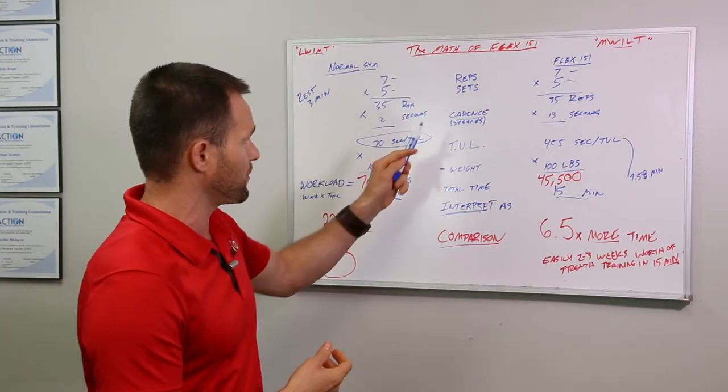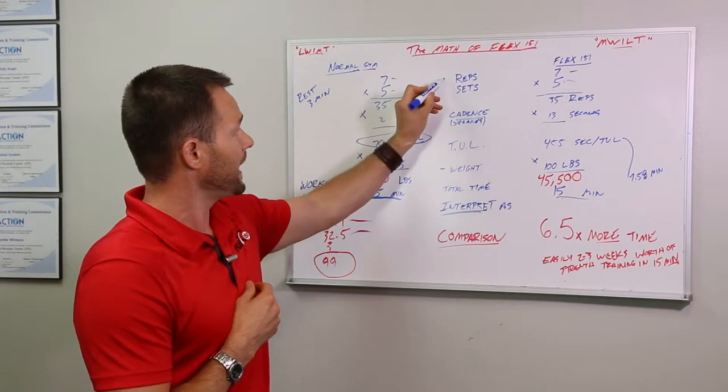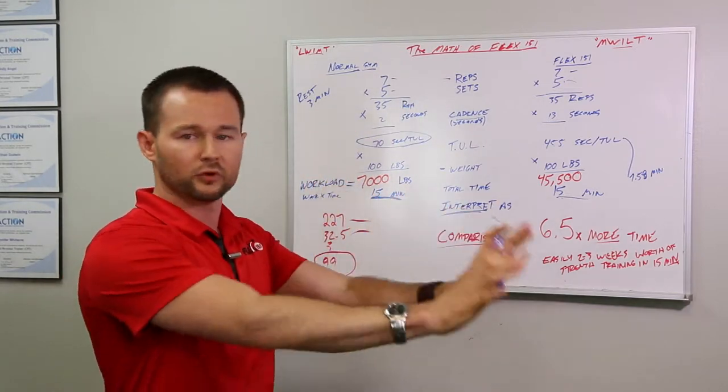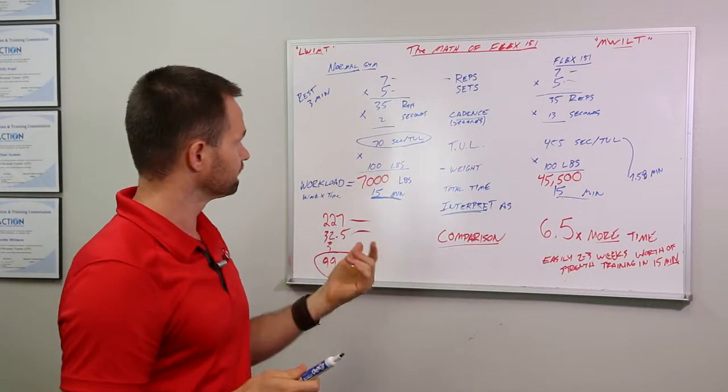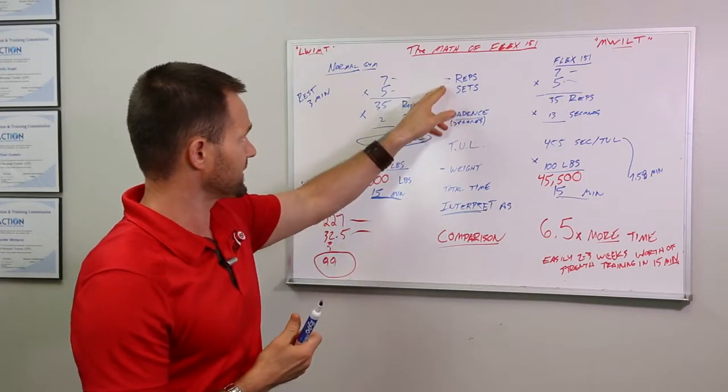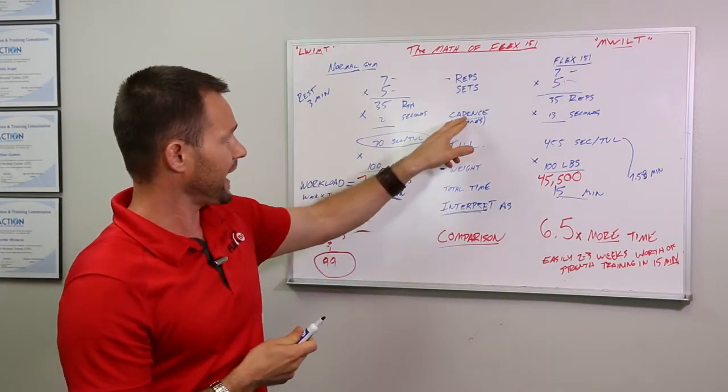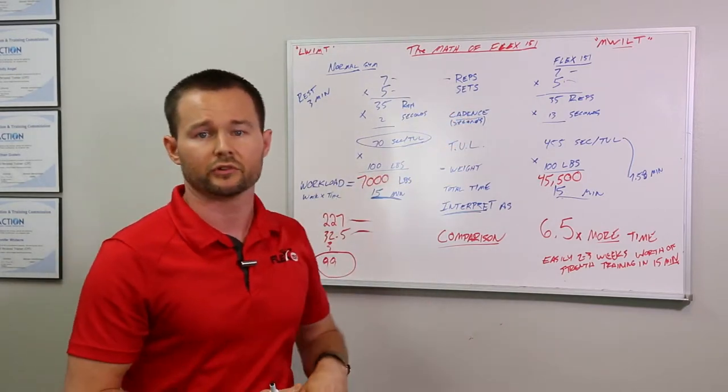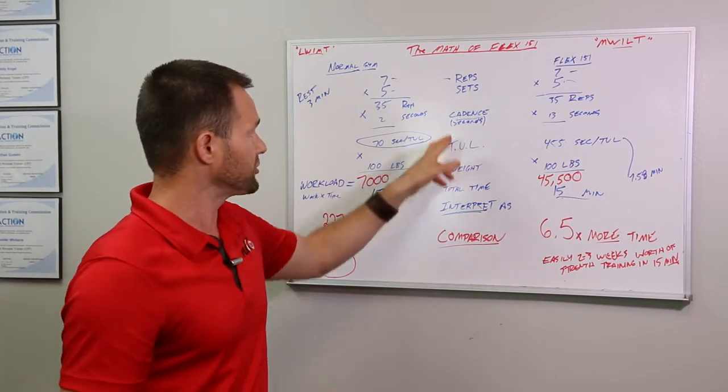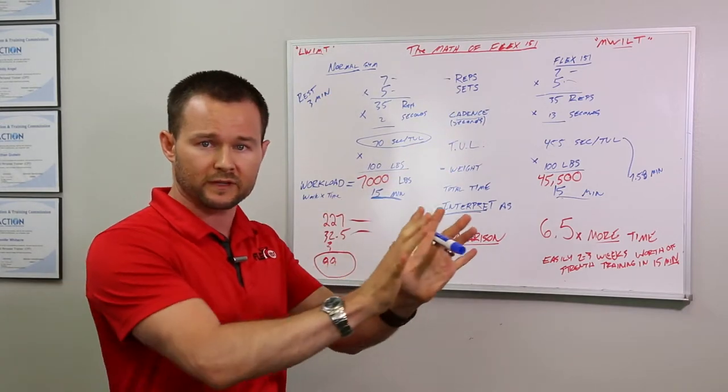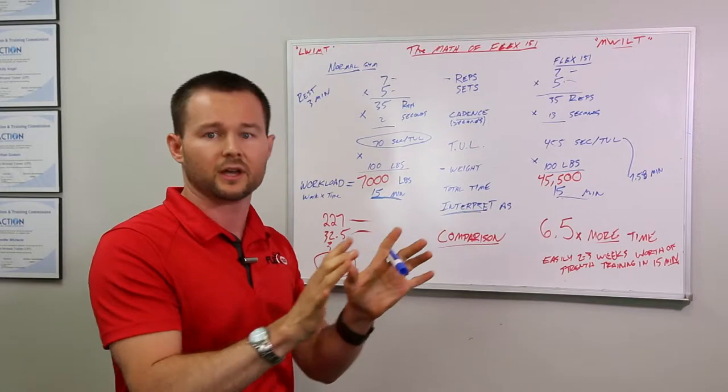So now that we know that, I think everybody should know this, but I'm going to double check just to be safe. A repetition is a single movement of a weight back and forth, up or down. A set is a series of repetitions, and your cadence is something we never talk about really in the lifting world, and we should, but your cadence is how fast are you moving the work across the range of motion.